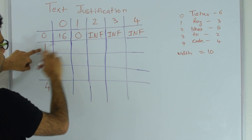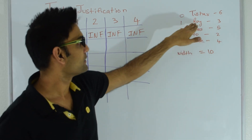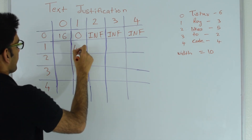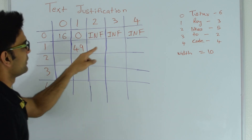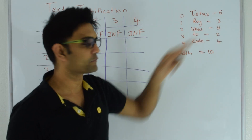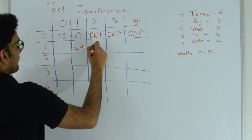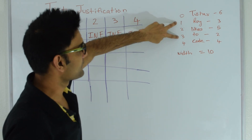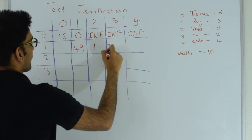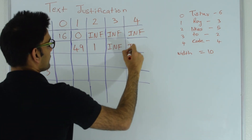For cell (1,1): storing 'Roy' alone — width is 10, 'Roy' is 3 characters, leaving 7 empty spaces, cost = 7² = 49. For (1,2): 'Roy' is 3, 'likes' is 5, plus 1 space between = 9, leaving 1 empty space, cost = 1² = 1. For (1,3): 3+5+2+1 space each = 12 characters, which exceeds 10, so this is infinity. For (1,4): also cannot fit on one line, so infinity.